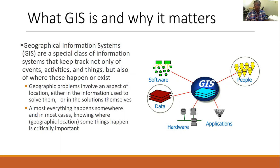There are at least five components of GIS. This includes software, data, hardware, applications, and people. All five of these components must be present in order for GIS to work.